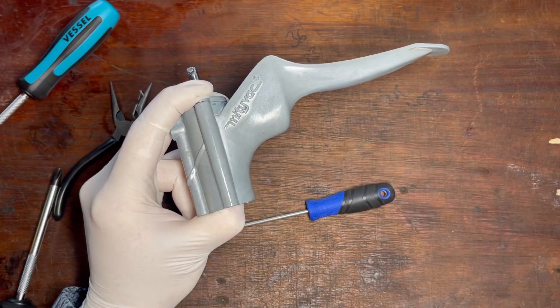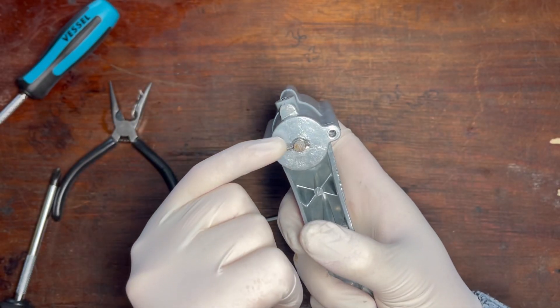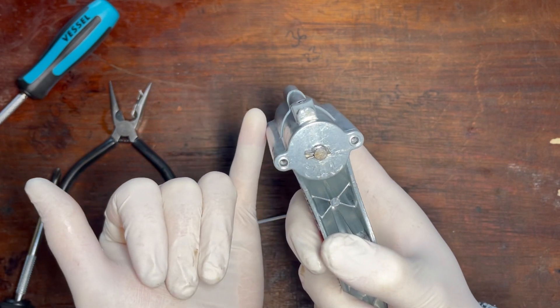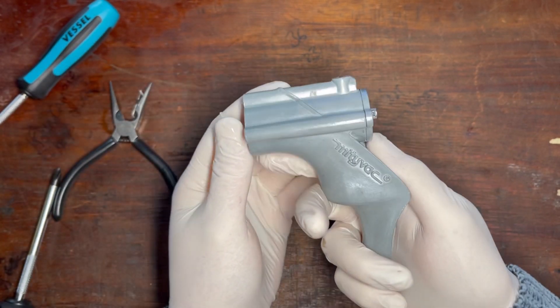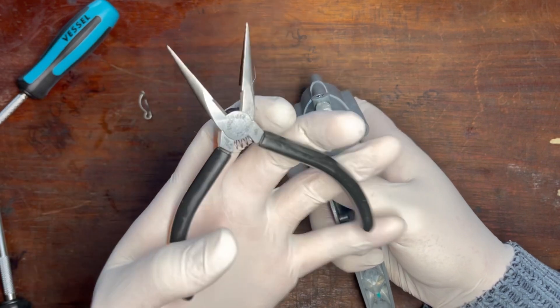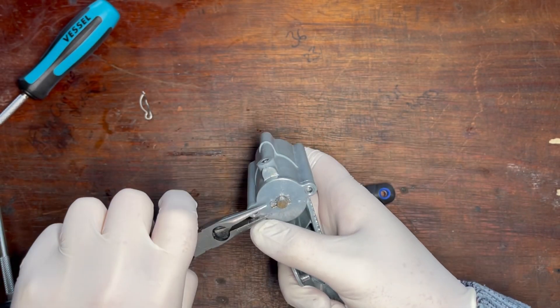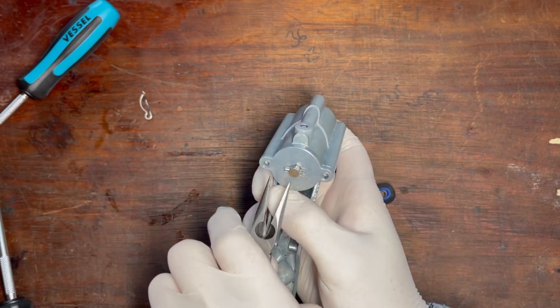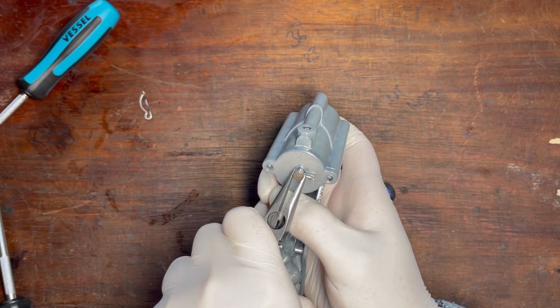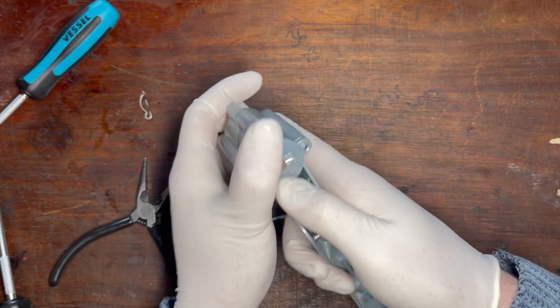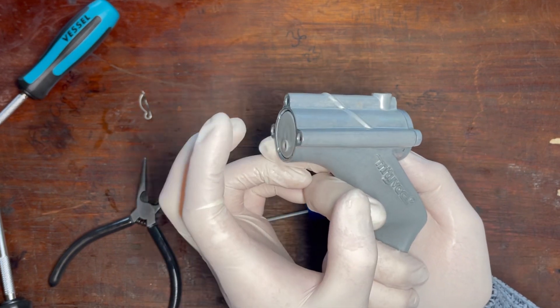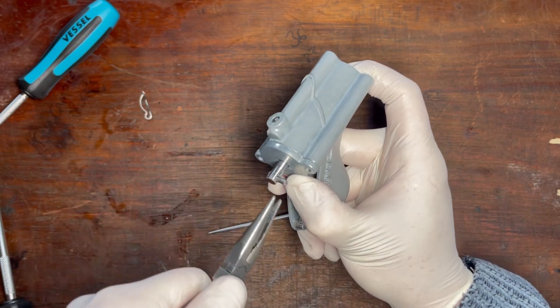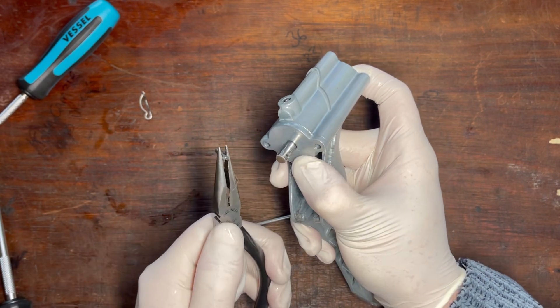Then what we need to do is to gently compress one side of this little split pin here. That will slip out and our piston then can then come out of the front of the housing. Gently just squeeze that together, now push it out one side. Put a bit of pressure onto the piston and it will slip all the way out nice and easy. And this pin is part of the service kit.